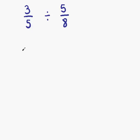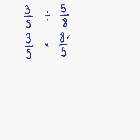Our last example is a division: 3 fifths divided by 5 eighths. To divide fractions, we change it to a multiplication by flipping the second fraction upside down. Multiplying these fractions gives the exact same answer as dividing. 3 times 8 is 24, and 5 times 5 is 25. This cannot be simplified, so 24 over 25 is our final answer.